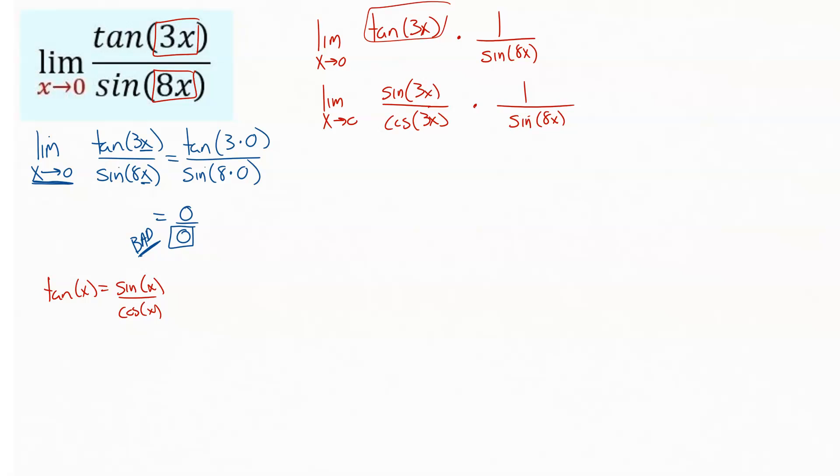At this point, again, because the insides of our trig functions don't match up, we cannot cancel out those two sine functions there. And so we don't really get any cancellation like you might see on some of these problems, which means we need an alternate method here.